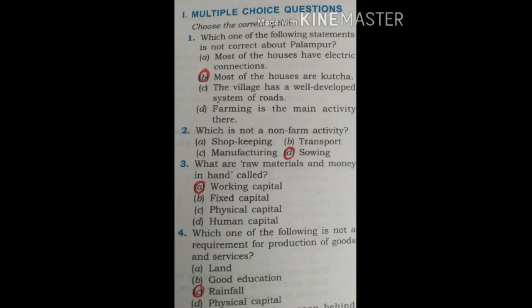Question 2: Which is not a non-farm activity? The four options are: Shopkeeping, Transport, Manufacturing, Sowing. The correct option is D — Sowing.